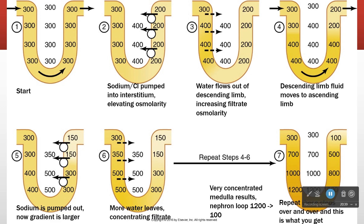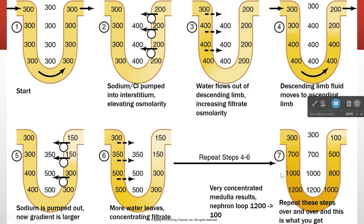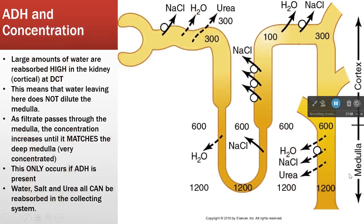What we get in the end is a very steep concentration gradient. We have an osmolar gradient down here of 1500 compared to up here at 300 or 100. This is the process of countercurrent multiplication — we exaggerate the medullary osmolarity by the interaction of the descending and ascending limb.